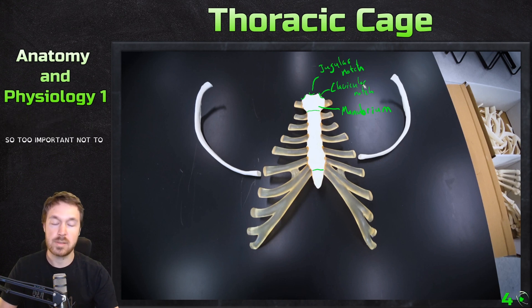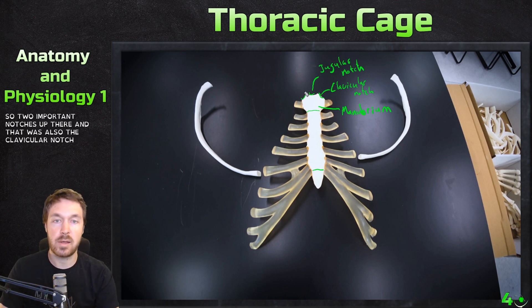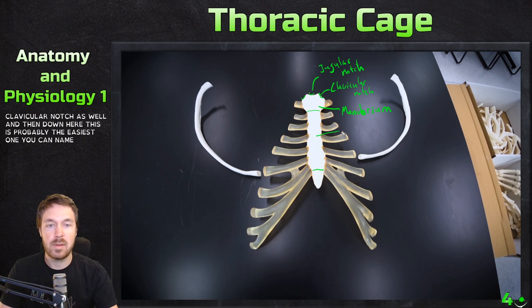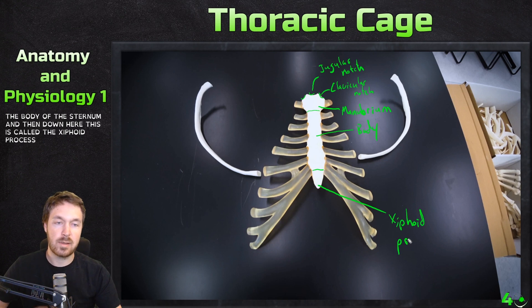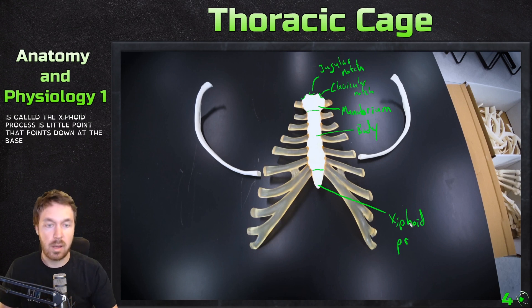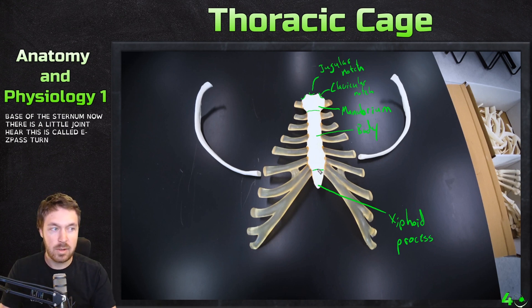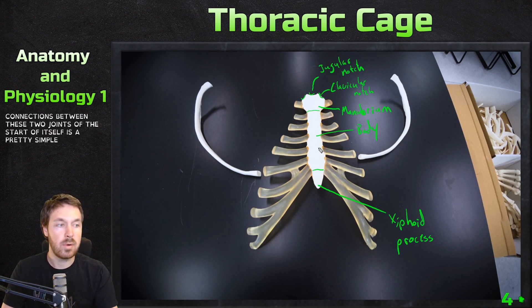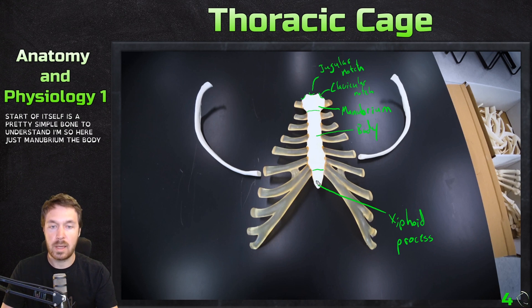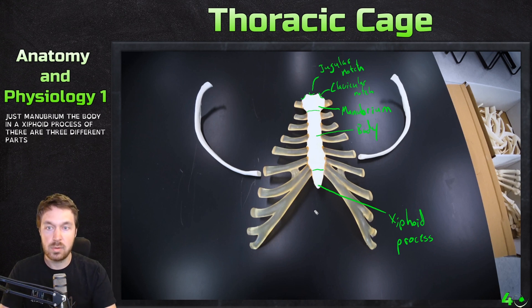So two important notches up there — the jugular notch and the clavicular notch. The middle section is called the body of the sternum — probably the easiest one to name. And then down at the base is the xiphoid process, a little point that projects inferiorly. There is also the xiphoid sternal joint at the base and the sternal angle up between the manubrium and body. So the sternum has three parts: the manubrium, the body, and the xiphoid process.